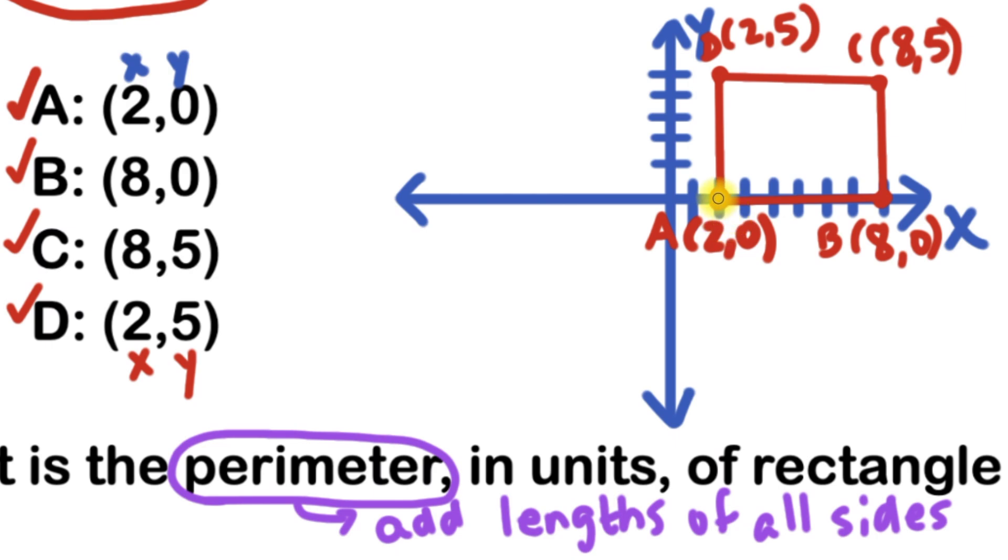Because we know that this is the point (2,0), and this is the point (8,0), we're really going from 2 to 8. And how far is it on a number line from 2 to 8? You can actually count out each space here. One, two, three, four, five, six. So this rectangle is six units long.